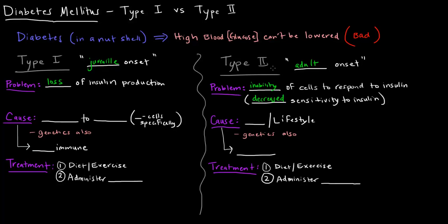So what's the cause of type 1 diabetes? The cause basically is damage to the pancreas, specifically the cells that create insulin which are the beta cells. Genetics can also play a role. The cause is often an autoimmune disease — basically your immune system attacks your own pancreas, specifically your beta cells, and damages them to a point where you can't create insulin at all or not enough insulin.